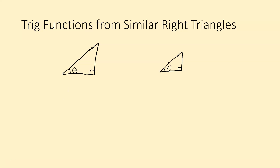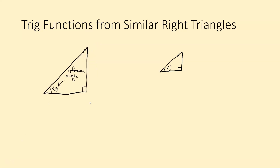If these triangles have the same angle, that is called the reference angle. So if these two triangles share the same reference angle, that means they have two angles congruent — we can say they're similar by angle-angle. And if they are similar by angle-angle, that means all of their side lengths are proportional.